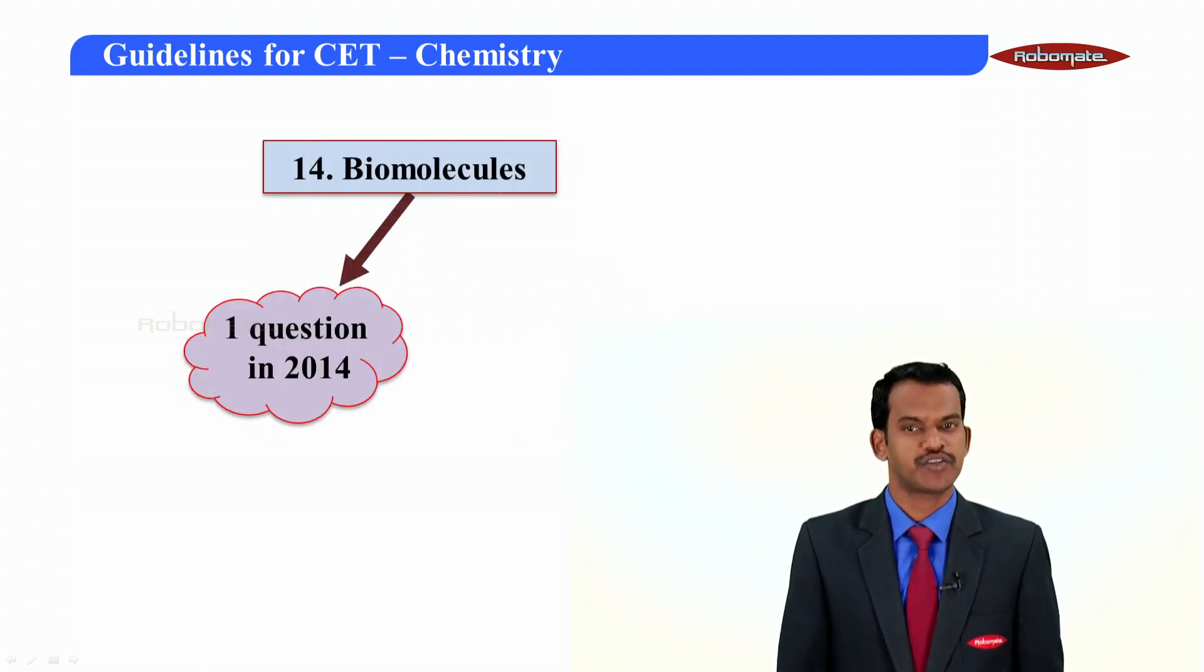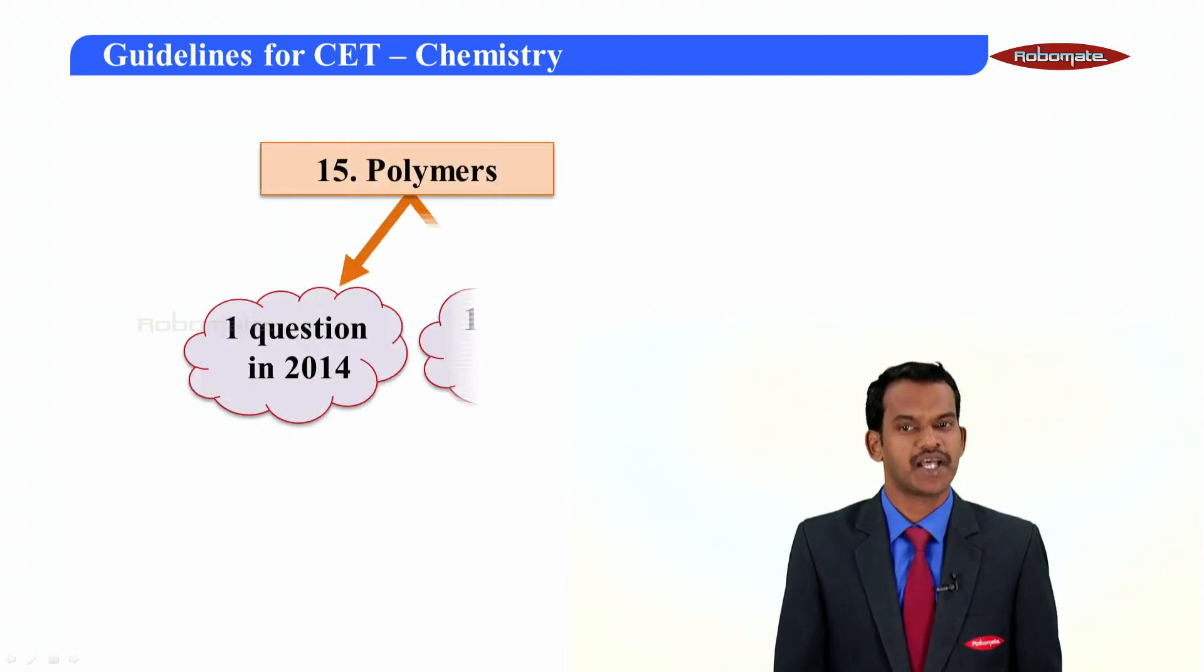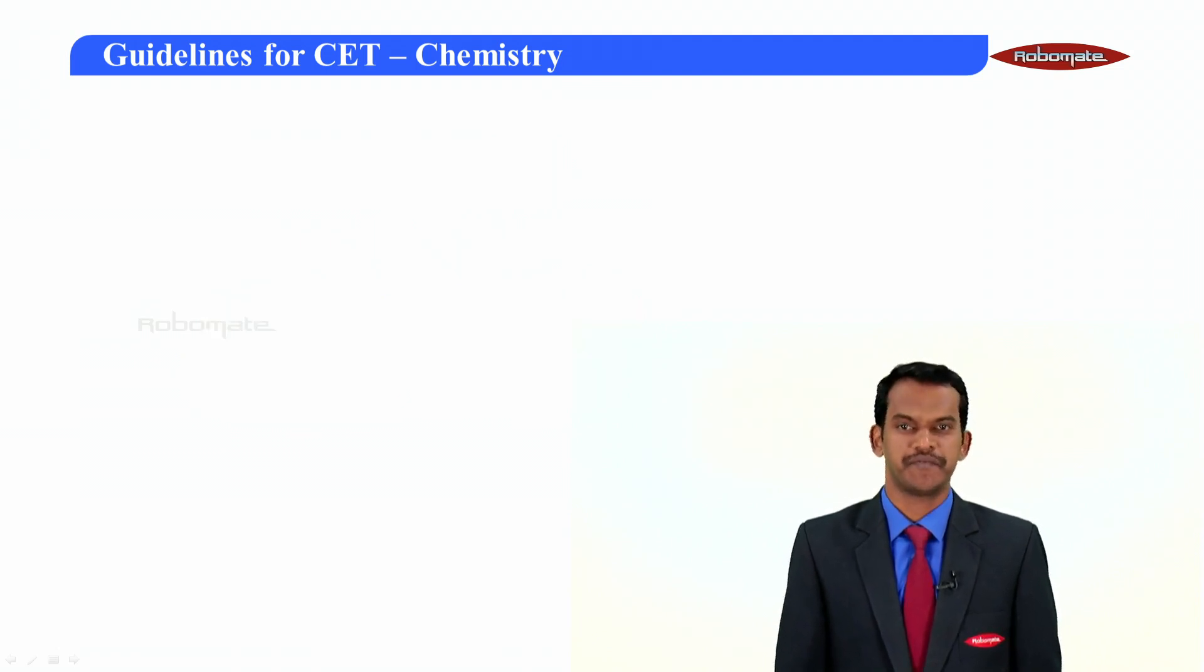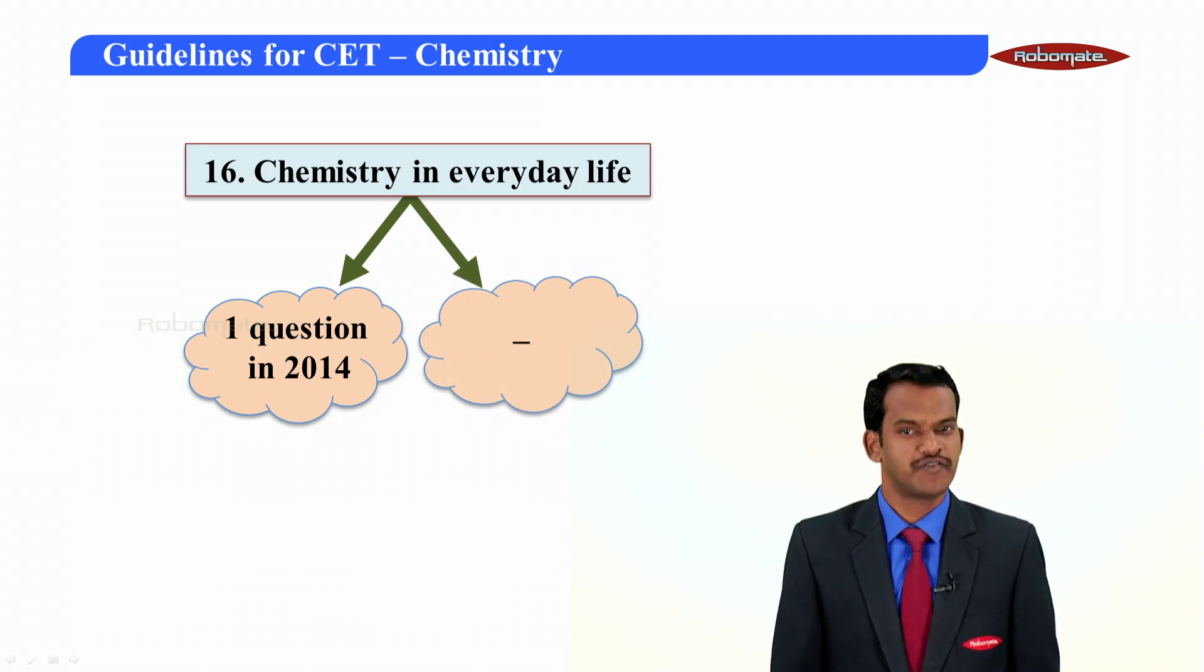Biomolecules - one question in 2014 and five questions in 2015. Polymers - one question asked in 2014 and 2015 also only one question. Chemistry in everyday life, the last topic - one question asked in 2014 whereas the question is not asked in 2015.